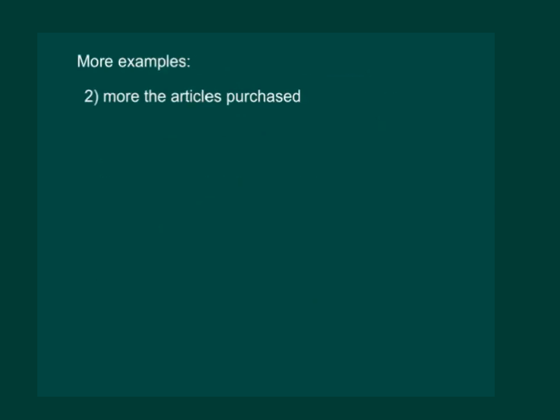Let us consider another example. Say we are going to a shopping mall and buying some goods. It is very obvious that somebody who buys more articles will obviously have to spend more money. That means more the articles purchased, more will be the money spent. Hence, money spent is automatically changing with the number of articles that we purchase.